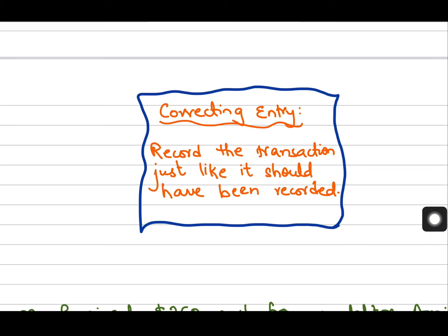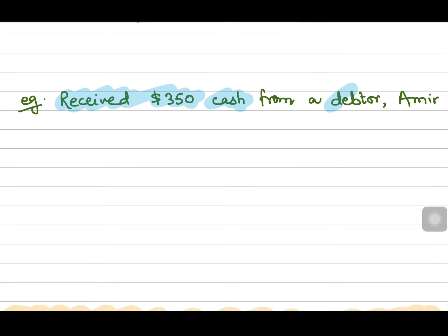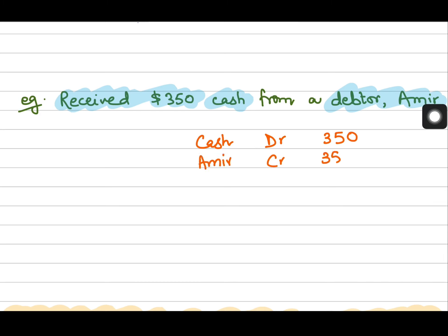Let's take another example. The business is receiving 350 cash from a debtor, Amir. Whenever the business receives cash, the asset increases, so cash will be debited with 350. The one paying the cash is a debtor, so Amir's account will be credited to show a decrease in his account balance. This is how you correct this error.